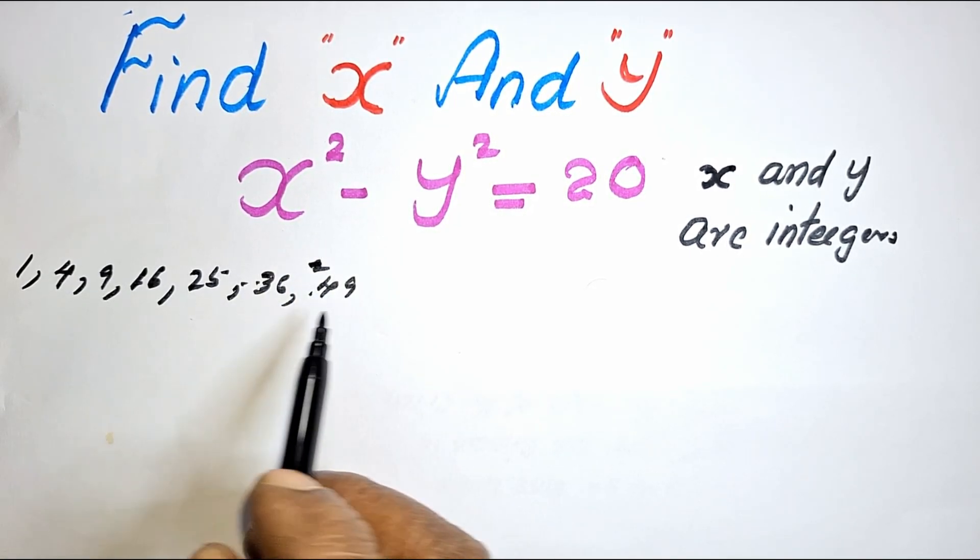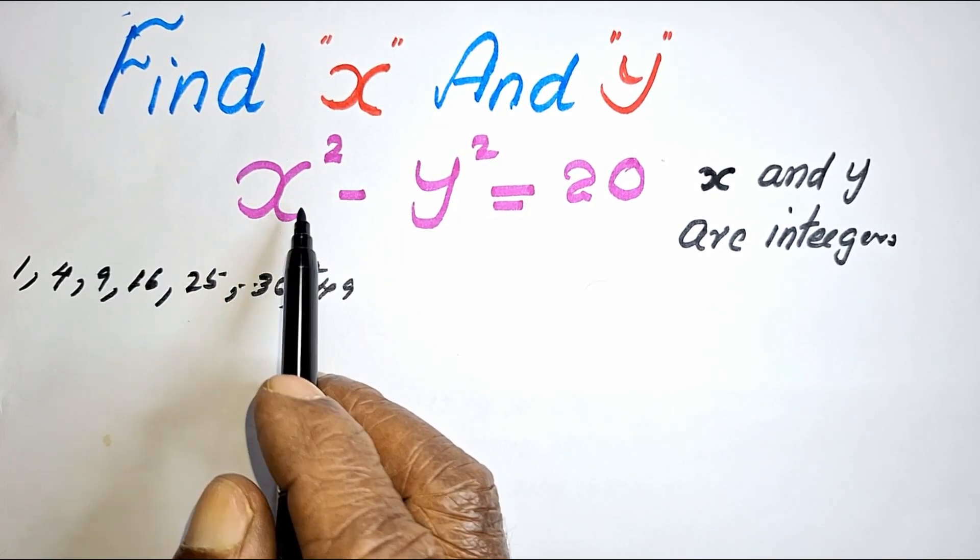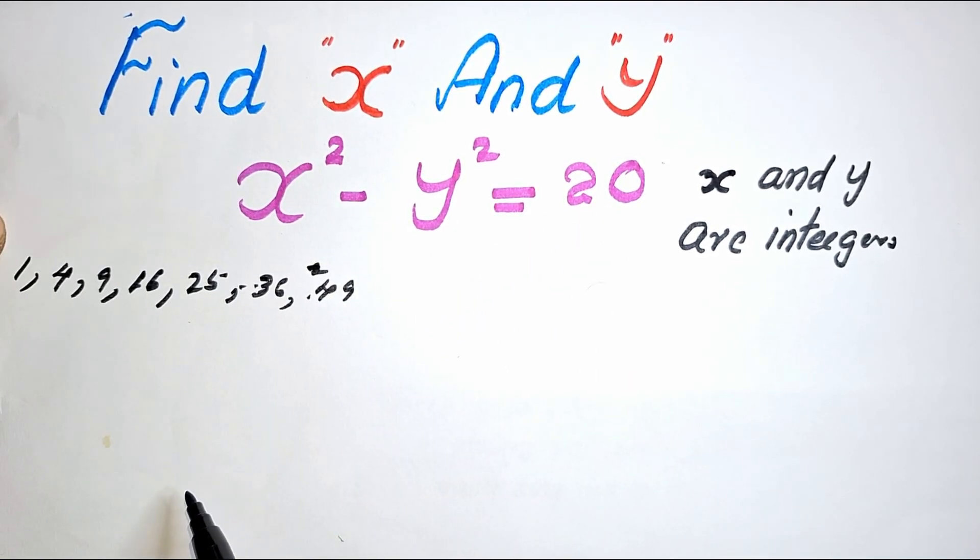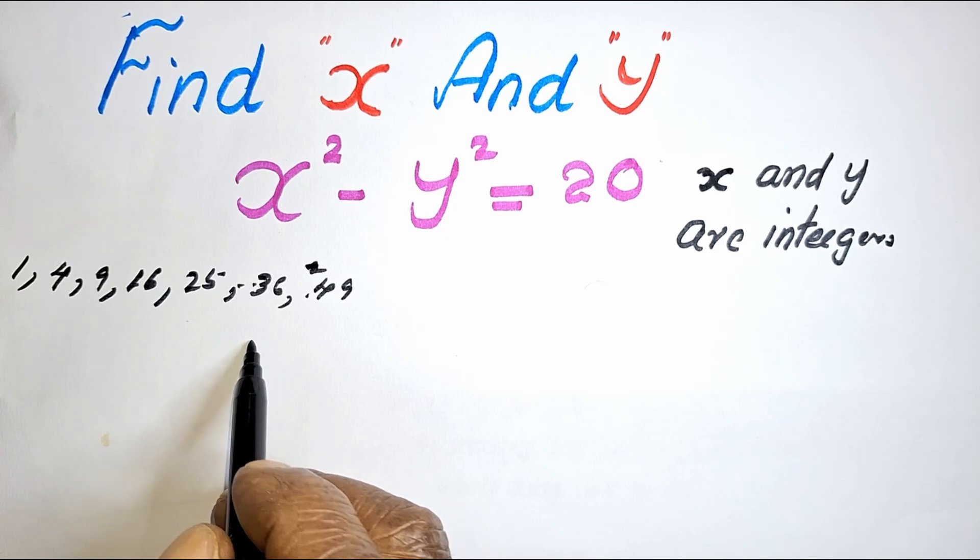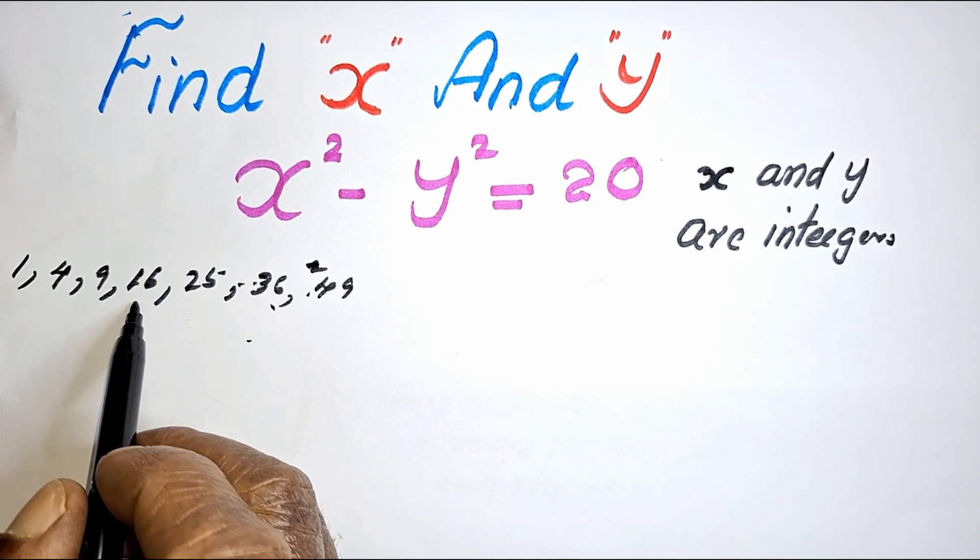What are the two square numbers whose difference is 20? Definitely, it should be 36 minus 16.